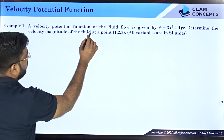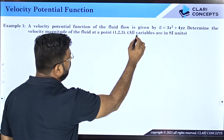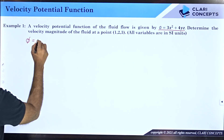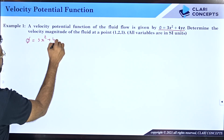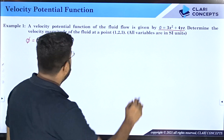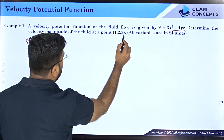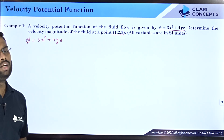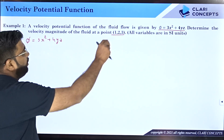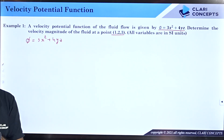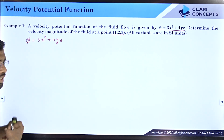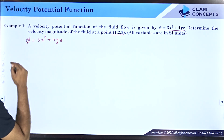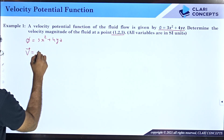The velocity potential function of a fluid flow is given by φ = 3x² + 4yz. Determine the velocity magnitude of the fluid at a point (1, 2, 3) — all variables are in SI units, meaning x, y, z are in meters. They have asked us to find the velocity magnitude at this point. The first task is to figure out u, v, and w.